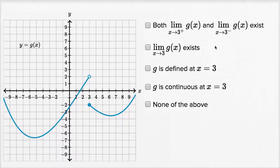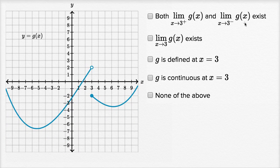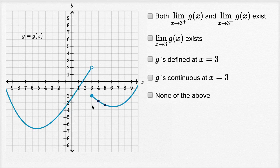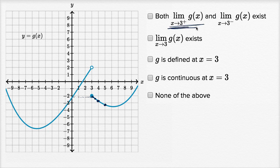Let's do another one. The first statement: both the right-hand and the left-hand limit exist as x approaches three. x equals three is where we have this jump discontinuity. Let's go from values larger than three. g of five is a little bit more negative than negative three. g of four is between negative two and negative three. g of three point five is getting closer to negative two. g of three point one is getting even closer to negative two. g of three point zero one is even closer to negative two. So this limit from the right exists and it is approaching negative two.